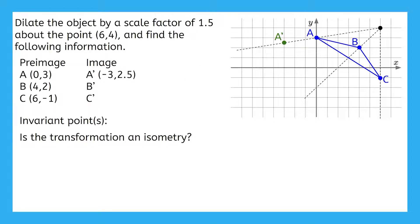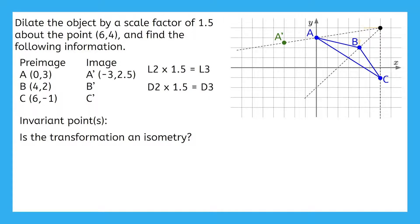I want you to have some think time here, so you try to find B prime and C prime on your own. Give yourself some time to go back in the video to re-watch anything if it'll help. Let's see if you were able to get the correct coordinates for B prime and C prime. To get from the center of dilation to point B, we have to move left 2 units and down 2 units. We can multiply each of those by the scale factor of 1.5, and we get left 3 and down 3. Starting back at the center of dilation, we move left 3 units and down 3 units to sketch in B prime.